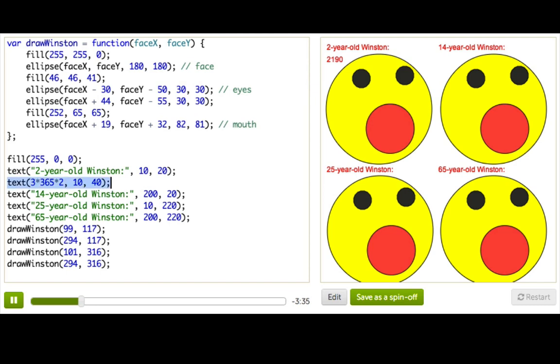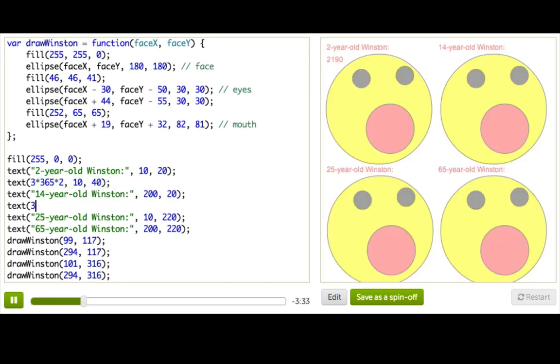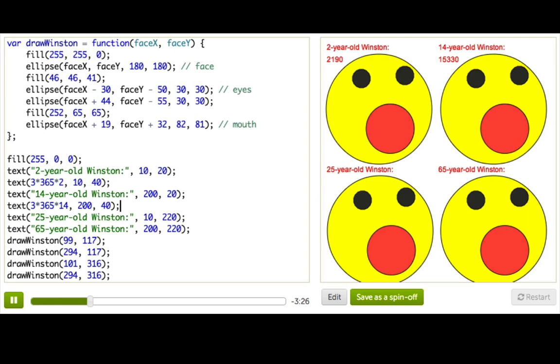Now, when he's 14 years old, let's see, he's had three times 365 times 14. And that is 15,000 donuts. All right, so I could keep doing this math, but I'm beginning to notice a pattern.